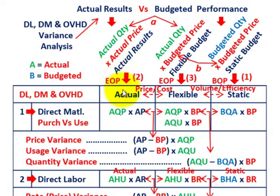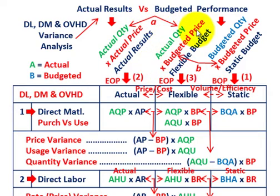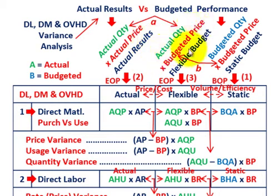Now we know our actual results at the end of the period and what we established as our budgeted or static amount at the beginning of the period. We can now determine the flexible amount for the period. The flexible budget is where you take your actual quantity from your actual results and multiply it times the budgeted price or budgeted cost coming from the static or standard budget. So: flexible budget = actual quantity (from actual results) × budgeted price (from static budget).